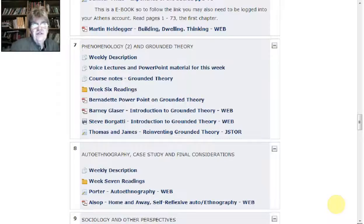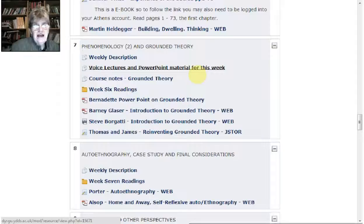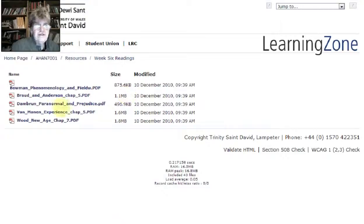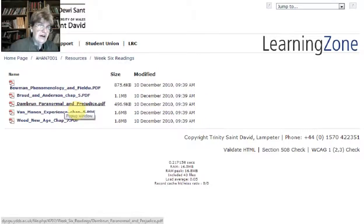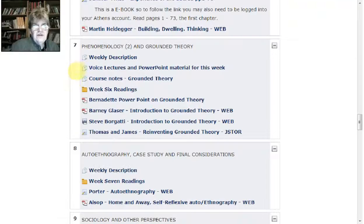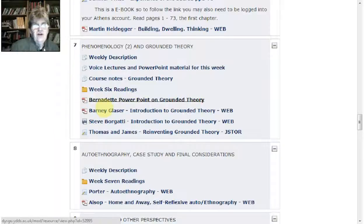And we'll be looking at this. There's some voice lectures and PowerPoints that I have done on this. You've got course notes on grounded theory, you've got readings on grounded theory. These are constantly changing. And you've also got a paper in here on Darren Burn and the paranormal and prejudice, which is not really grounded theory, but it's another paper that looks at belief in astrology and its issues. So there's different things to look at there. There's a PowerPoint I've put up a while ago on grounded theory, giving you the essence of it.